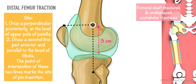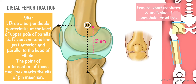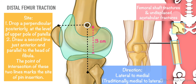The pin is passed in a lateral to medial direction, along or slightly posterior to the mid-coronal plane of the femoral shaft. Traditionally, a medial to lateral direction is suggested to avoid injury to the femoral artery in Hunter's canal.